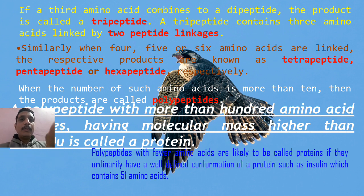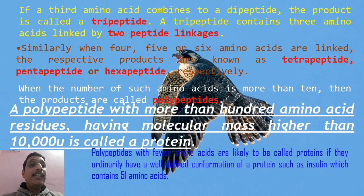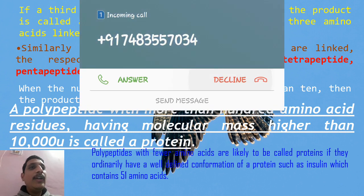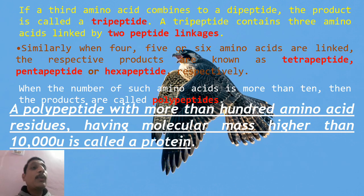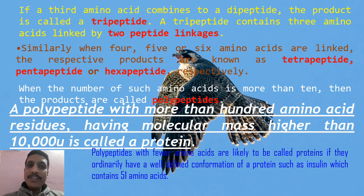There are some exceptional cases. Polypeptides with fewer amino acids are likely to be called proteins if they have a well-defined conformation of a protein. If a chain contains fewer than 100 amino acids but has a well-defined protein conformation, such a chain is also called a protein.